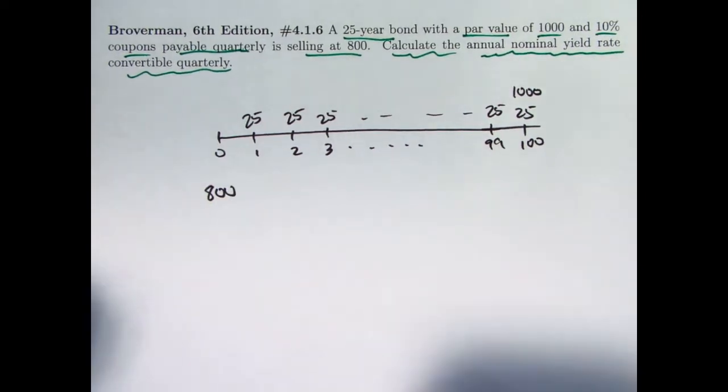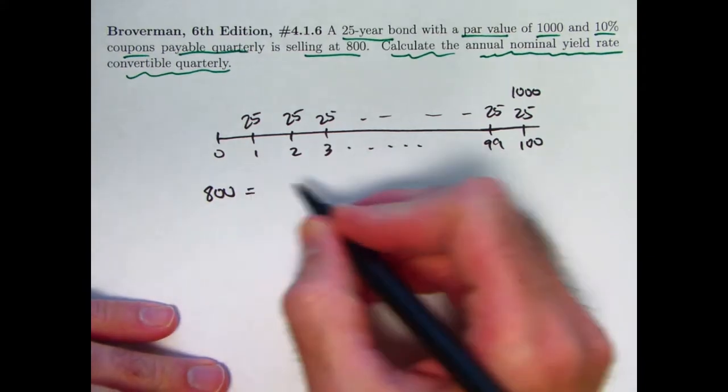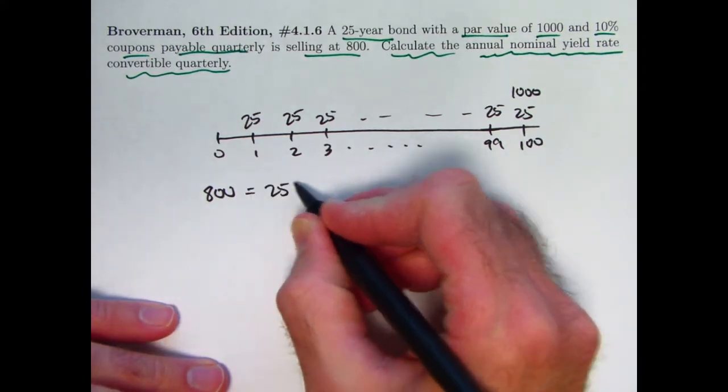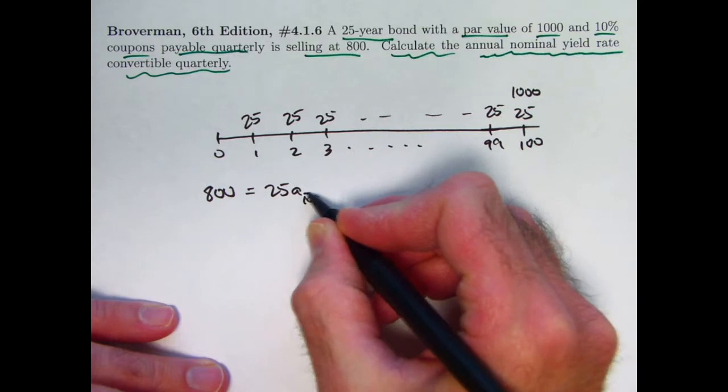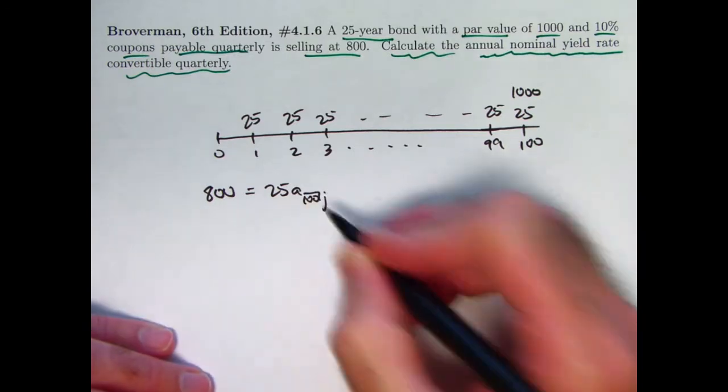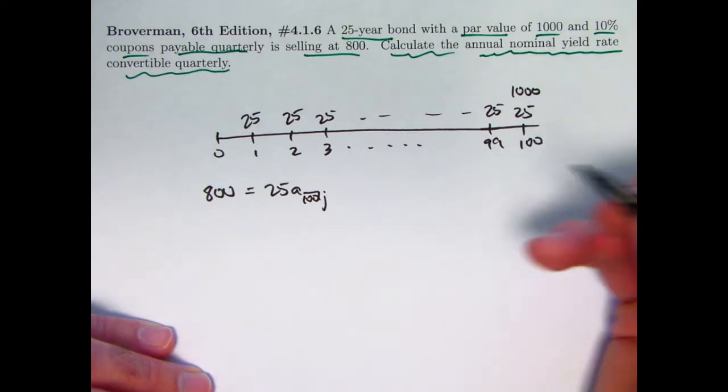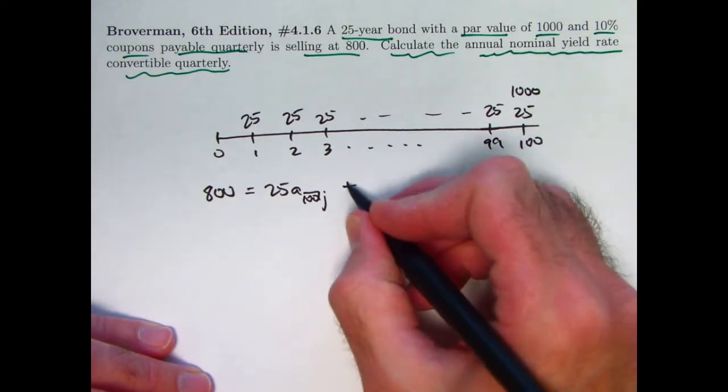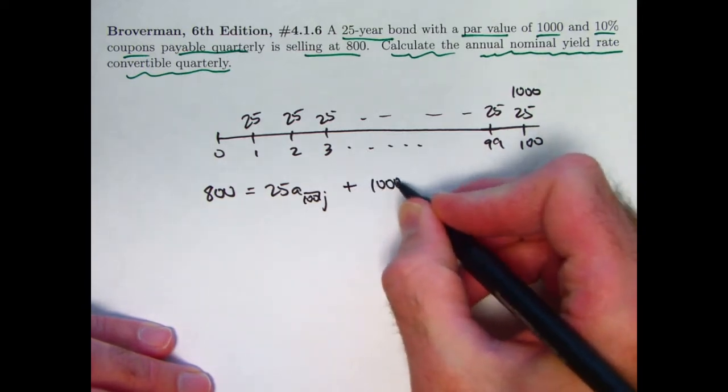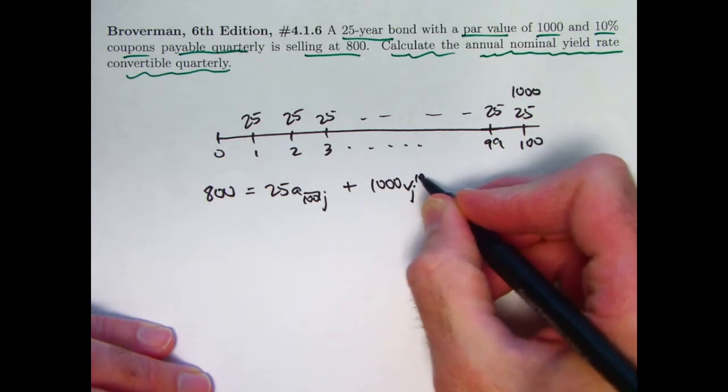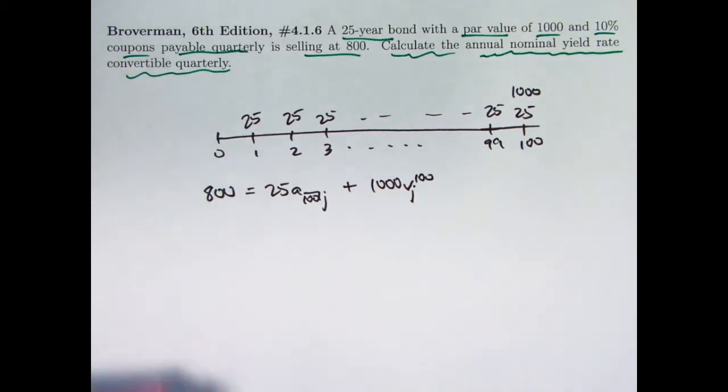If you write down an equation, you could say 800 equals 25a sub 100 with unknown effective quarterly rate j, plus 1,000v sub j to the 100th power. I can find j and multiply by 4 to get the final answer. But you really can't solve that without a calculator. We need to approximate the solution with financial functions.